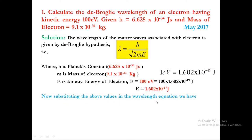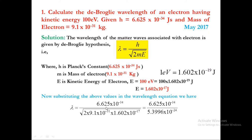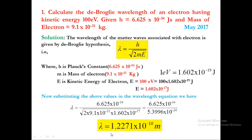Substituting all these values into the wavelength equation lambda, we get 6.625 into 10 power minus 34 divided by the square root of 2 into 9.1 into 10 power minus 31 into 1.602 into 10 power minus 17. Calculating the denominator gives 5.3996 into 10 power minus 24. Finally, lambda is equal to 1.2271 into 10 power minus 10 meters, or 1.2271 angstroms, where angstrom is the standard unit for 10 power minus 10 meters.